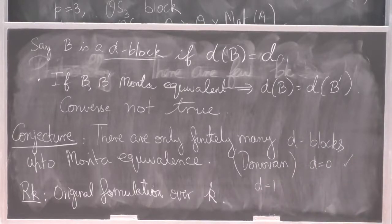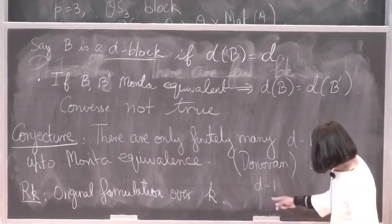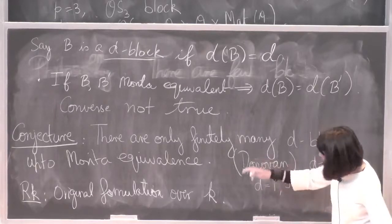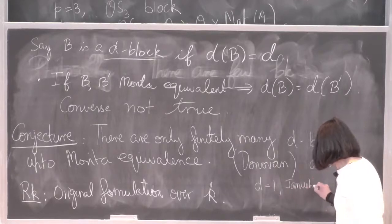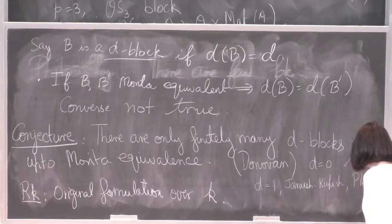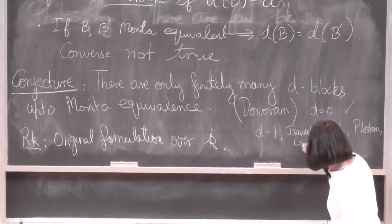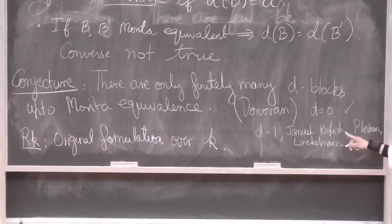For D equals 1, the references are Janusz and Kupisch over the field of characteristic P, then Plesken did a lot of work lifting to O, and the final description is due to Linckelmann. This started in the late 60s/70s, and the lifting is maybe late 80s. The one other case known is D equals 2, but only for the prime P equals 2. For P equals 3, D equals 2: if you could do this conjecture, it would be absolutely amazing — I strongly urge people to try.